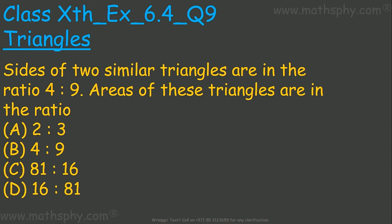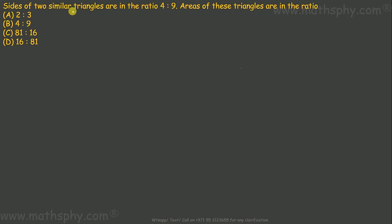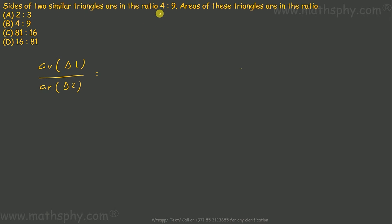Since it says similar triangles, the area of triangle 1 over area of triangle 2 will be equal to the square of the ratio of corresponding sides. The ratio of corresponding sides is 4 is to 9, so 4 is to 9 squared means 16 over 81.